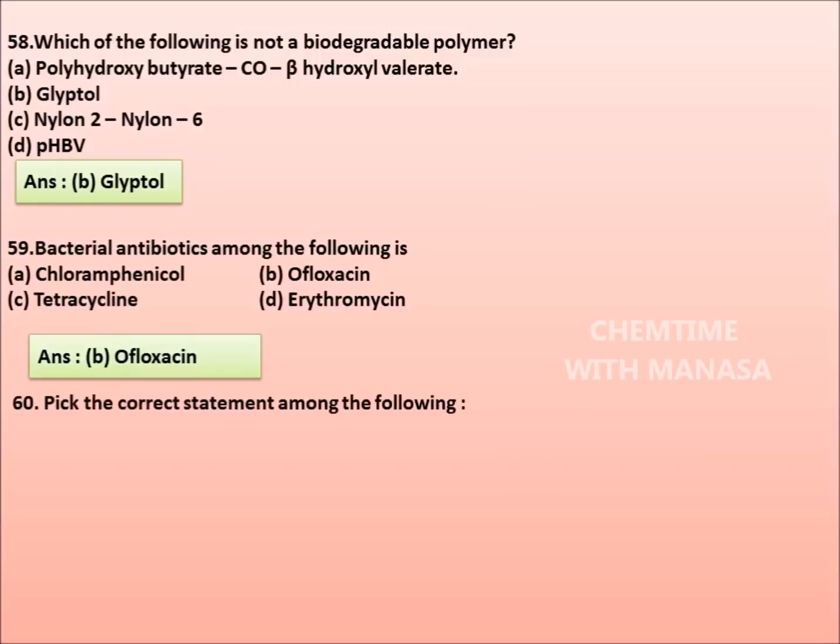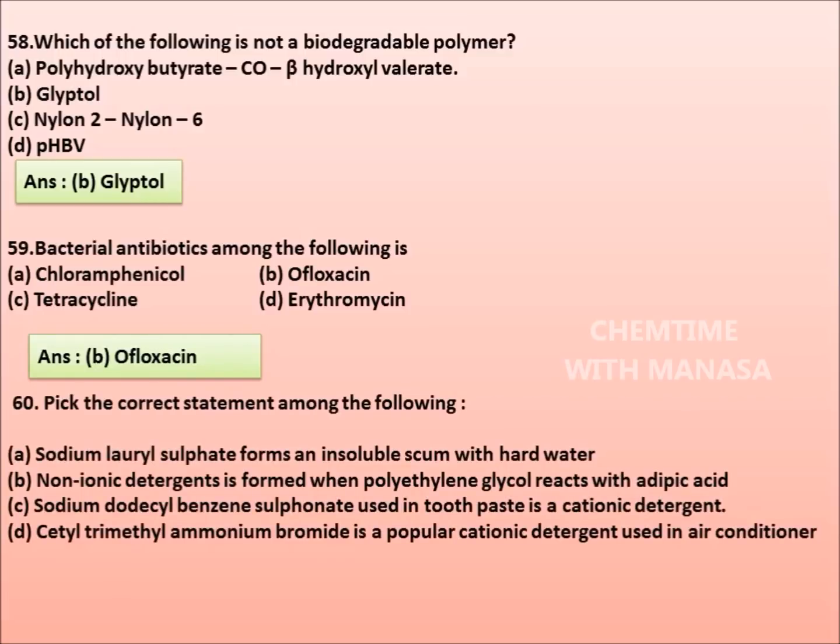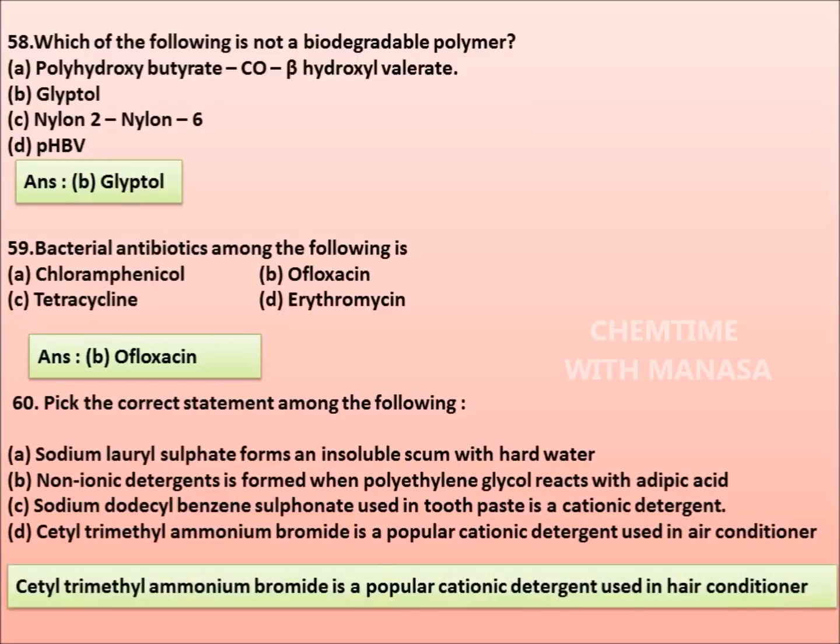60. Pick the correct statement among the following. Sodium lauryl sulfate forms an insoluble scum with hard water. Non-ionic detergent is formed when polyethylene glycol reacts with adipic acid. Sodium dodecyl benzene sulfonate used in toothpaste is a cationic detergent. Cetyl trimethyl ammonium bromide is a popular cationic detergent used in air conditioner. Friends, here also all the four statements are wrong. But actually cetyl trimethyl ammonium bromide is a popular cationic detergent used in hair conditioner. Might be it is a spelling mistake, but cetyl trimethyl ammonium bromide is a popular cationic detergent used in hair conditioner, which might be the correct answer.